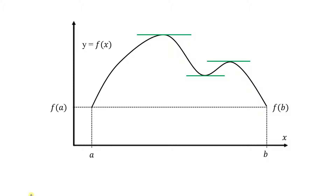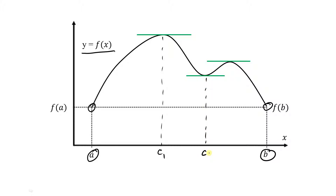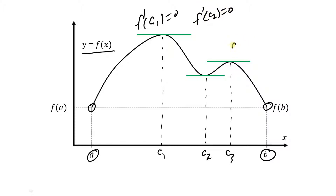In this example, we have a function f(x) on the interval a to b. Notice it's continuous, and it also appears to be differentiable. Notice that f(a) is equal to f(b). And in this particular example, it appears there are three points where f prime of c1, f prime of c2, and f prime of c3 are each equal to zero.